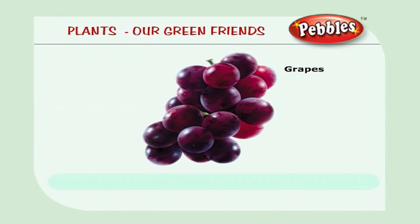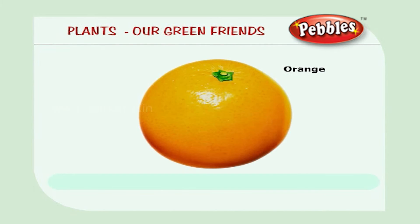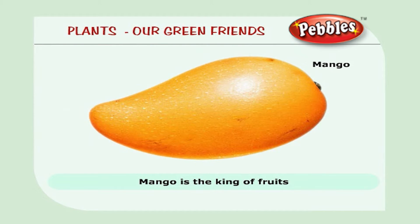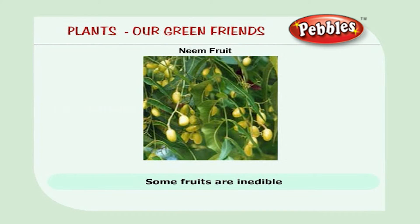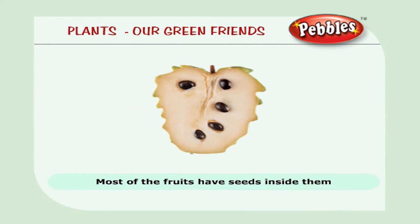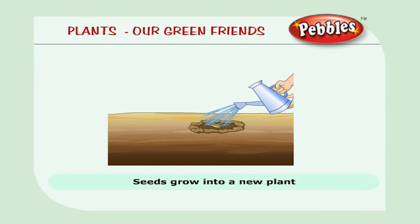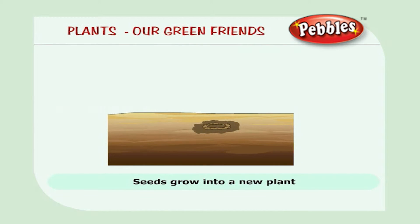Tomato, watermelon, grapes, lime, orange. Mango is the king of fruits. Some fruits are inedible, like the neem fruit. Most of the fruits have seeds inside them. When the seeds are planted in the ground, they grow into a new plant.